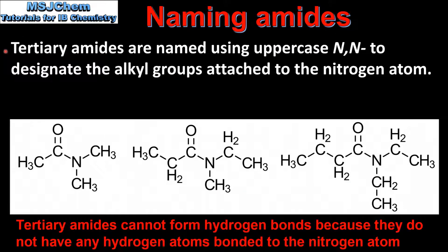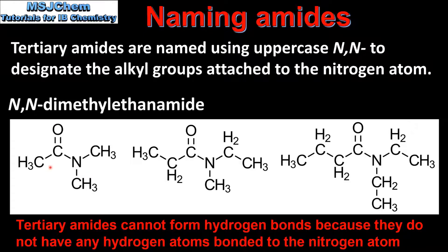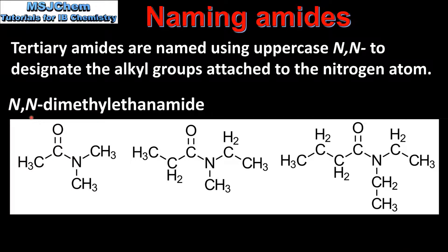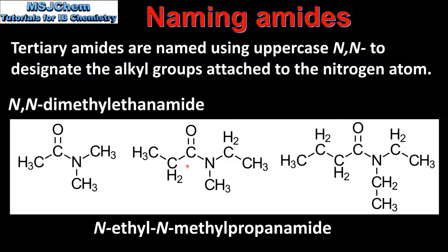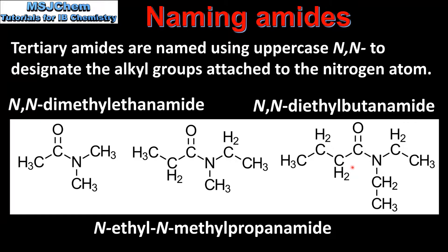Finally we will look at naming tertiary amides. These are named using uppercase N,N to designate the alkyl groups attached to the nitrogen atom. The nitrogen atom has two alkyl groups. Our first example is a 2 carbon amide, ethanamide, with two methyl groups bonded to the nitrogen atom, giving N,N-dimethyl ethanamide. In our second example we have a 3 carbon amide, propanamide, with one ethyl group and one methyl group bonded to the nitrogen atom. We put the alkyl groups in alphabetical order, so this molecule is named N-ethyl N-methyl propanamide. In our last example we have a 4 carbon amide, butanamide, with two ethyl groups bonded to the nitrogen atom, giving N,N-diethyl butanamide.